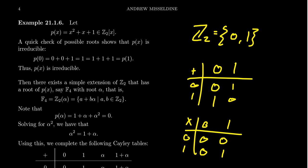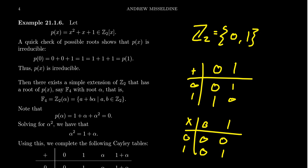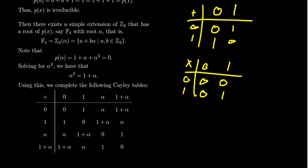Mimicking the construction from Kronecker's theorem, we construct a simple extension of Z2 by adjoining a root of p(x) to Z2. This forms a field we call F4 — a field with four elements. By construction, F4 = Z2[α] where α is a root of p(x) = x²+x+1, and I claim that every element of F4 can be written as a+bα where a and b are binary scalars in {0,1}.